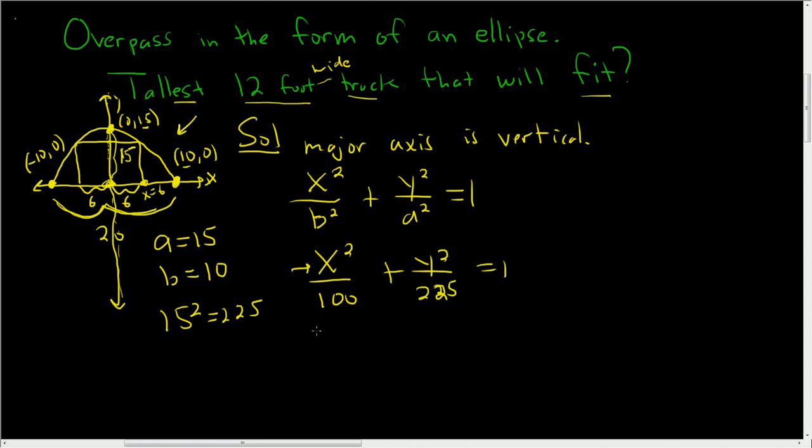So if you plug in 6, you get 6 squared over 100 plus y squared over 225 equals 1. So if you subtract this piece, you get y squared over 225 equals 1 minus 36 over 100, because 6 squared is 36. Let's keep going.